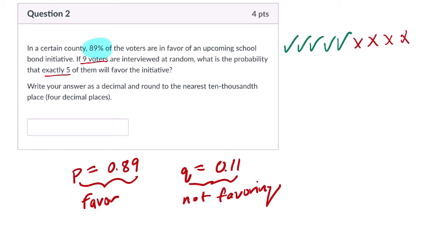And that probability, to get five in a row of people who favor it, that would be, oh right here, 0.89 to the fifth times not favoring it four times, which is 0.11 to the fourth. That's just one order.